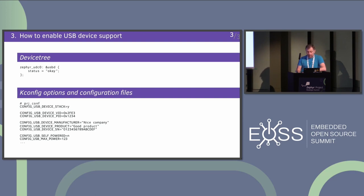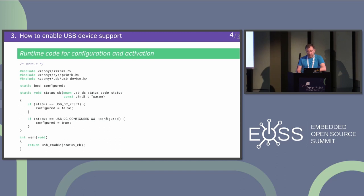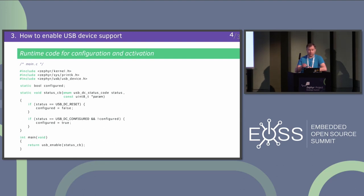The configuration for self-powered or maximum power is for the specific configuration. Only one configuration is supported for the current stack, and it's set using Kconfig options, so you can change it at runtime — and that's one of the issues. You need a small amount of code that depends on the classes you use or your application, but you need to provide some minimal code to enable USB. One thing not everyone knows: you can pass a status callback to the USB enable function and it will be called every time there is a new event on the lower level, to let the application know if the host has selected a configuration.